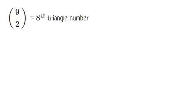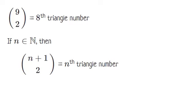In general, if n is a natural number, then n plus one take two is the nth triangle number, which we calculate as one-half times n times n plus one.